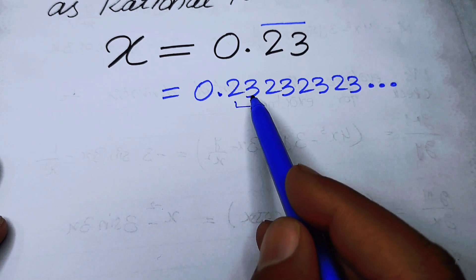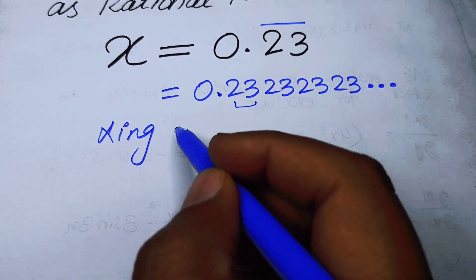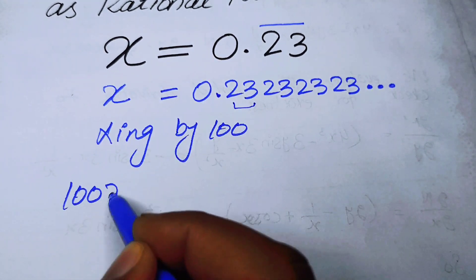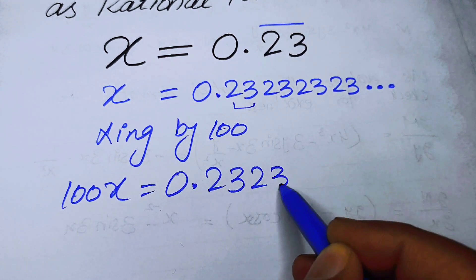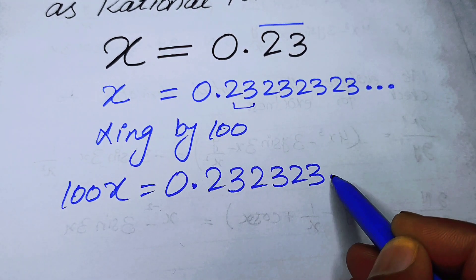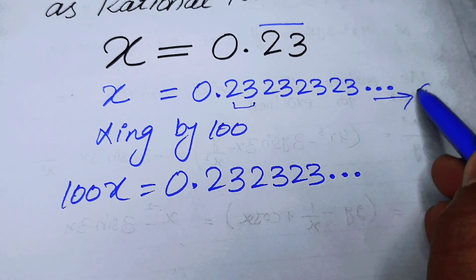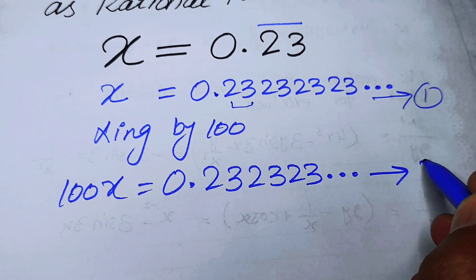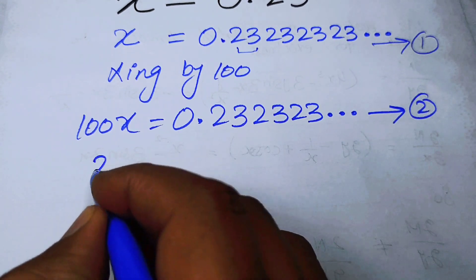Let x = 0.2323... (equation 1). Multiplying both sides by 100, we get 100x = 23.2323... and we can call this equation 2.